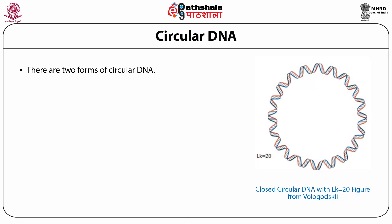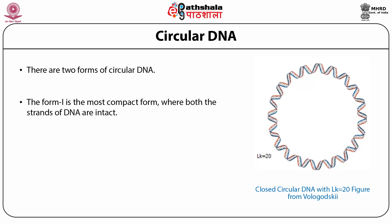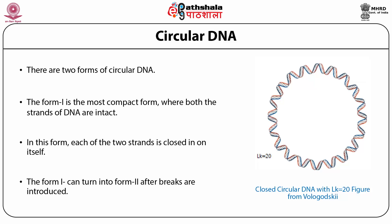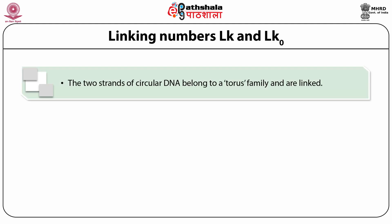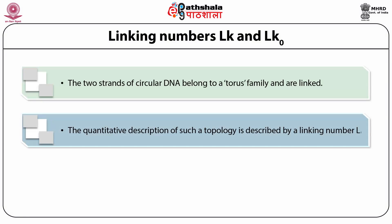There are two forms of circular DNA. Form one is the most compact form where both strands of DNA are intact; each of the two strands is closed in itself. Form one can turn into form two after breaks are introduced. We depict in this picture a closed circular DNA with linking number LK equal to 20. There are two linking numbers: LK and LK₀. The two strands of circular DNA belong to a torus family and are linked; the quantitative description of this topology is described by the linking number LK.